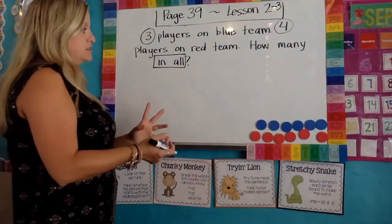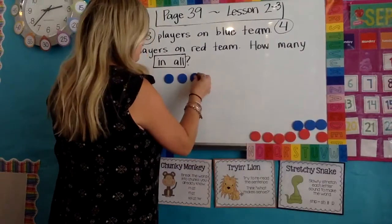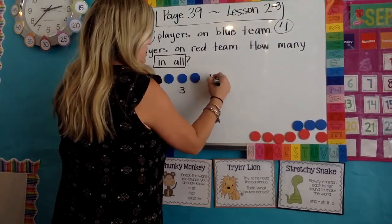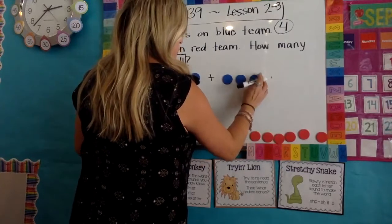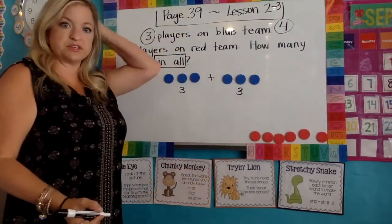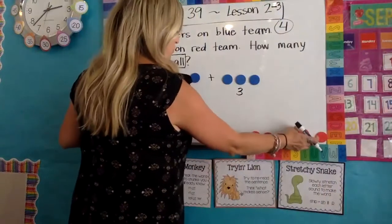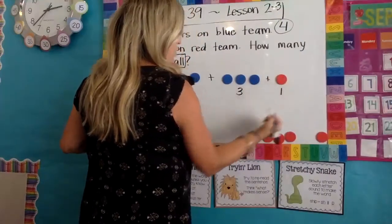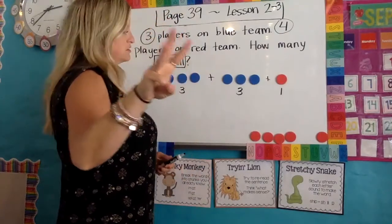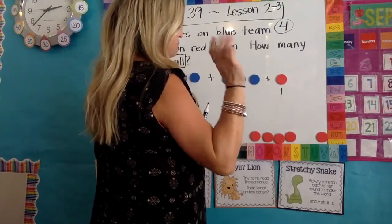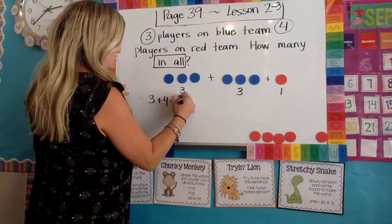I'm going to show you how you can solve it. You could do a doubles fact, which is three plus three. Then three plus three plus one. Hopefully you know that three plus three equals six — three, four, five, six. And one more is, counting on, seven.